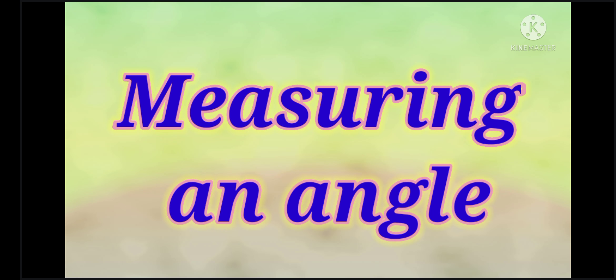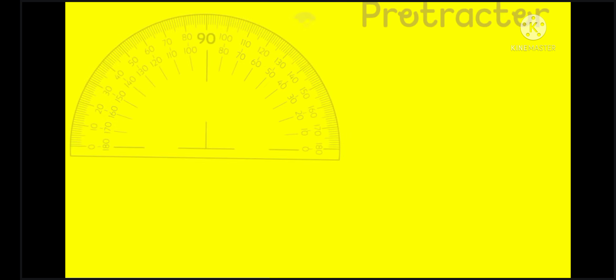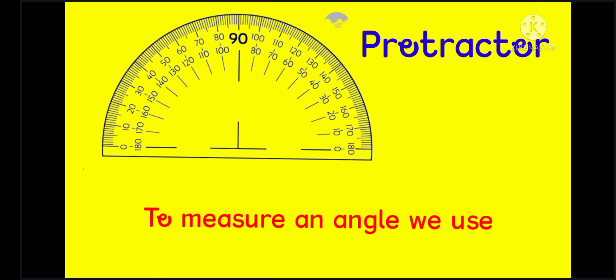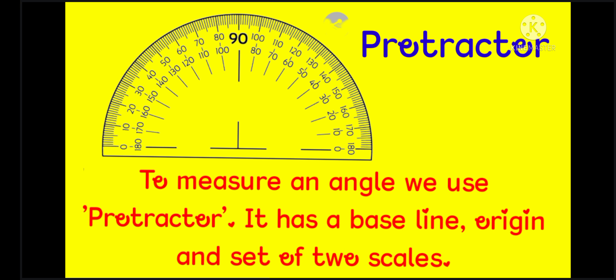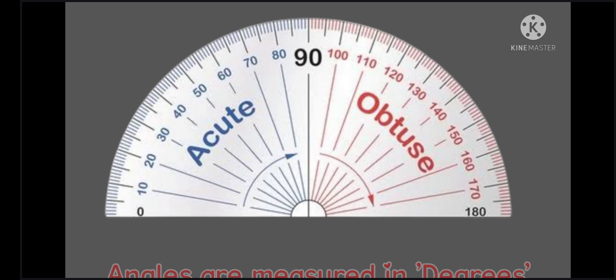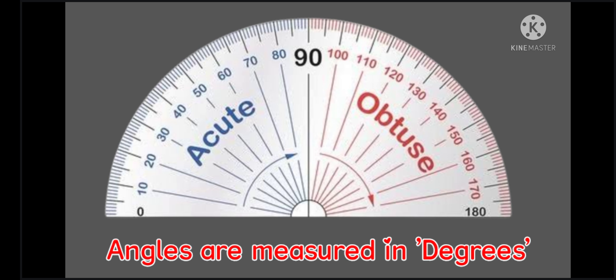Measuring an angle. Protractor. To measure an angle we use protractor. It has a baseline, origin and set of two scales. Angles are measured in degrees.